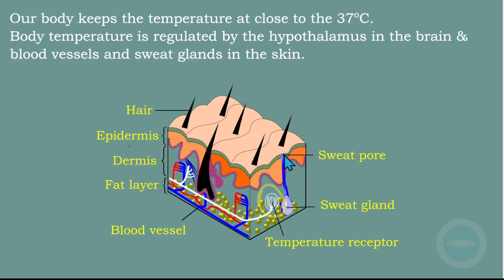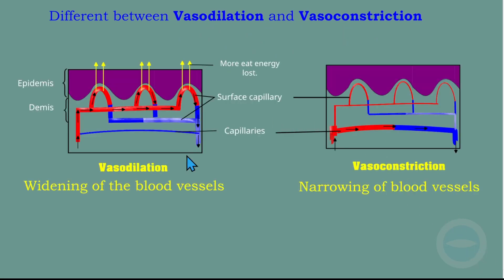You might be asked to label this structure in an exam. Next, we discuss the difference between vasodilation and vasoconstriction. Vasodilation is the widening of the blood vessels — they become wide to allow more blood to pass through. Vasoconstriction takes place when the blood vessel becomes thin, restricting blood flow.